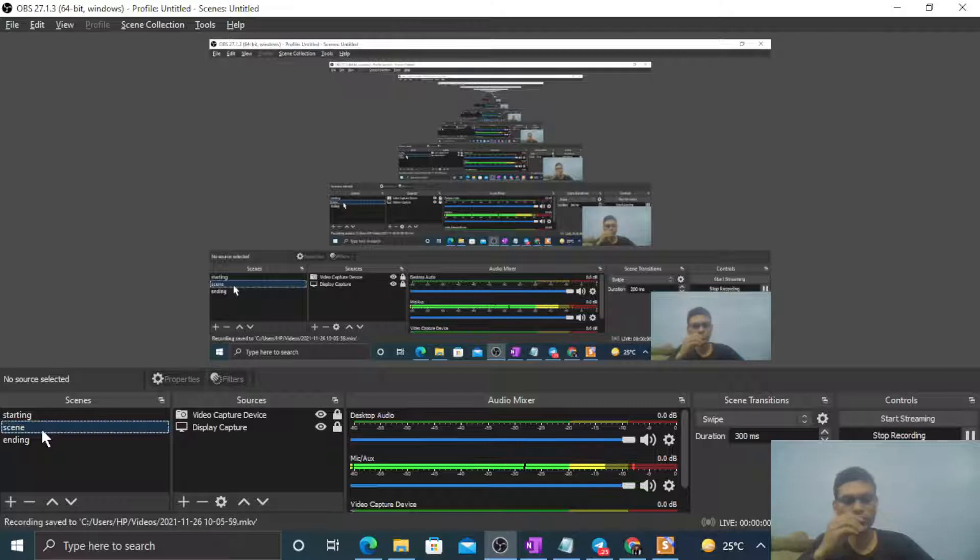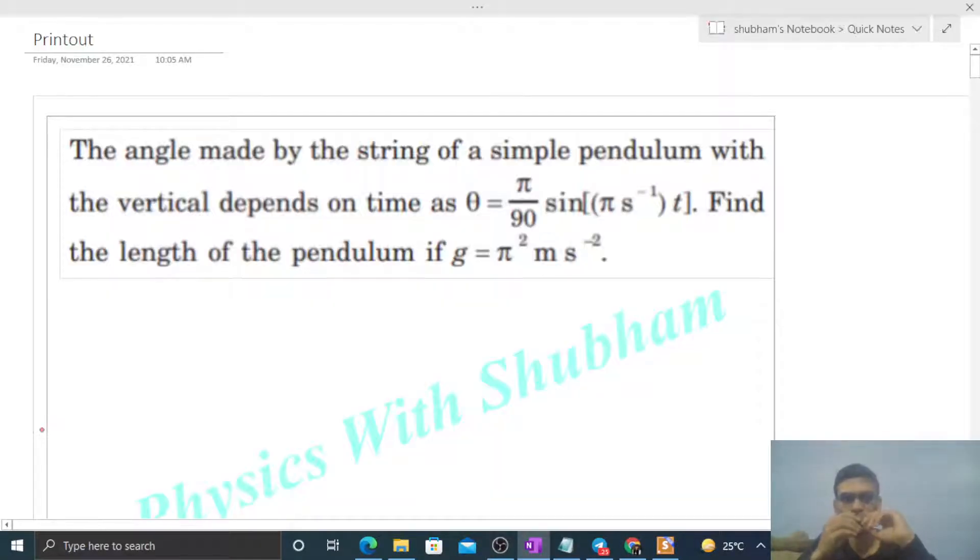Hi everyone, today let's discuss an interesting problem. The angle made by the string of a simple pendulum with the vertical depends on time as theta equals pi/90 sine of pi times t. Find the length of the pendulum if g equals pi squared.